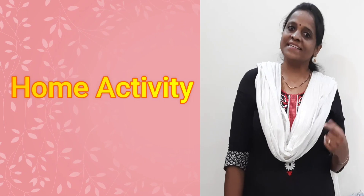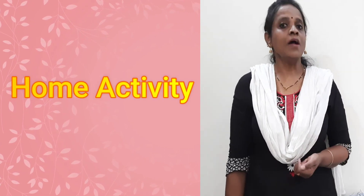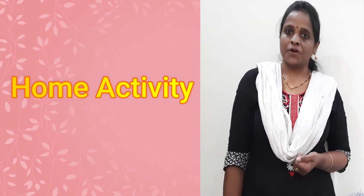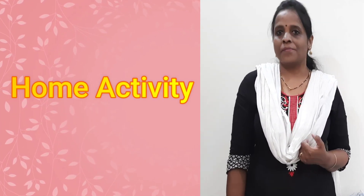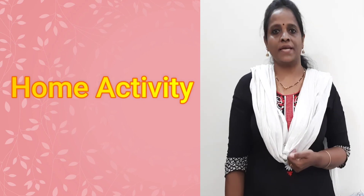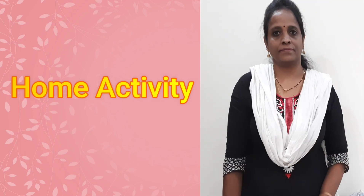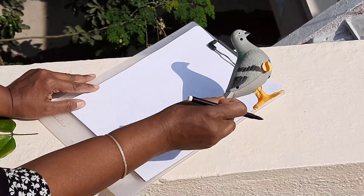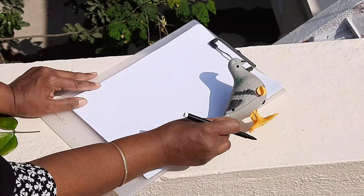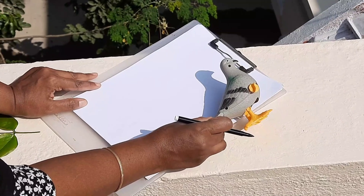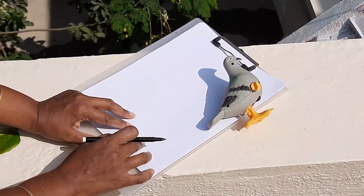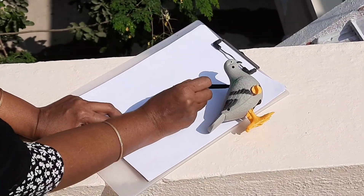Now it is time for the Om activity. Are you all ready? Let's begin. This activity is a shadow activity. For this, you need a white sheet, an object, and a pencil.